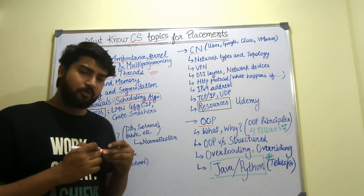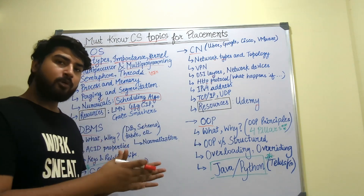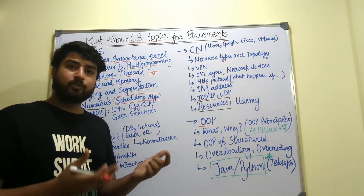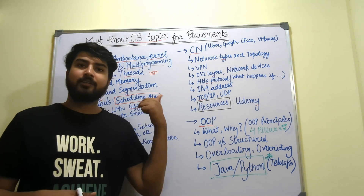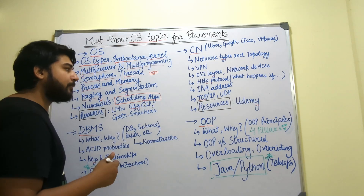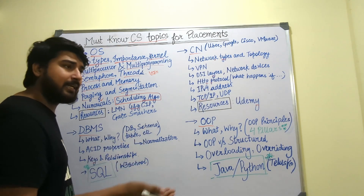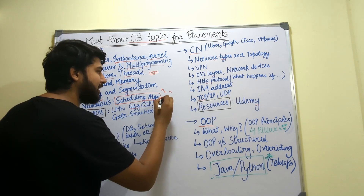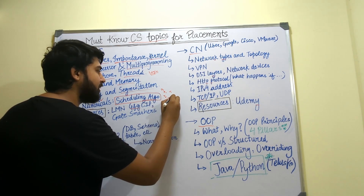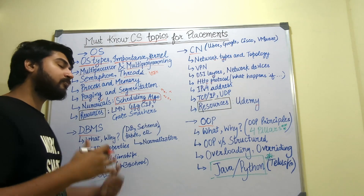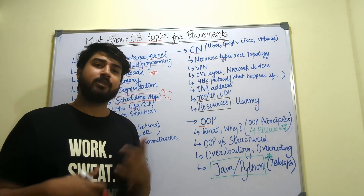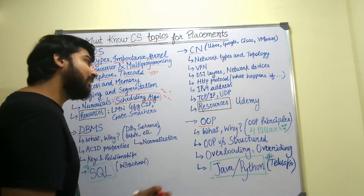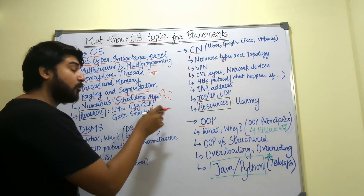I attended the online rounds of a lot of good product-based companies, and there were rounds where they asked MCQ numericals based on scheduling algorithms. You might have heard of algorithms like first come first serve, shortest job first, etc. A numerical will be framed like: you have multiple jobs J1, J2 with processing times P1, P2, and based on the algorithm you calculate the completion time and turnaround time of these jobs. So it's very important that you know these numericals as well.